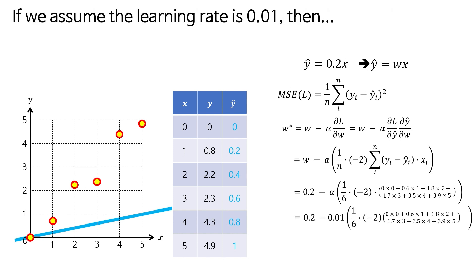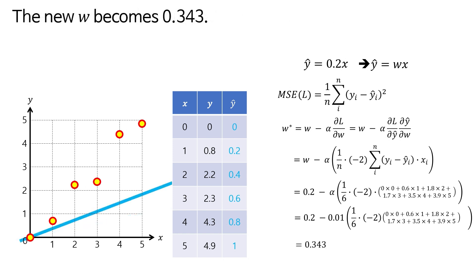If we assume the learning rate is 0.01, then the new w becomes 0.343.